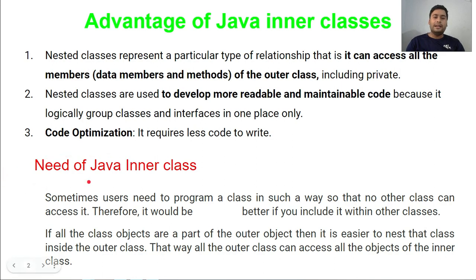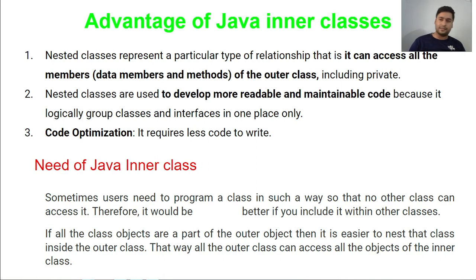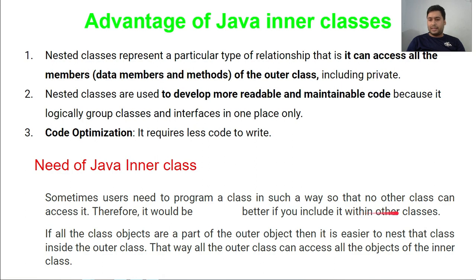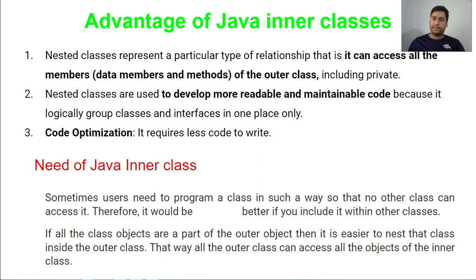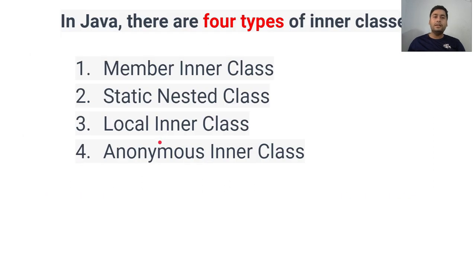Sometimes a user needs to program a class in such a way that no other class can access it. If I want to write some classes which are not required to be accessed by other classes, I can write those as inner classes so they can't be accessed outside. Also, if all the class objects are part of the outer object, it is easier to nest that class inside the outer class, so all outer class objects can access all objects of the inner class.